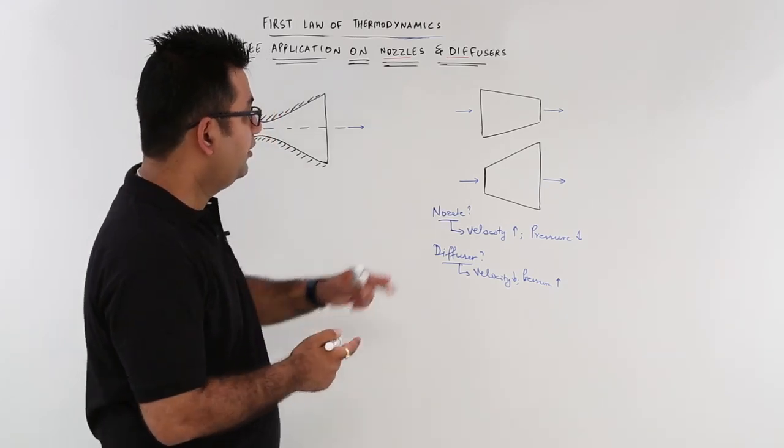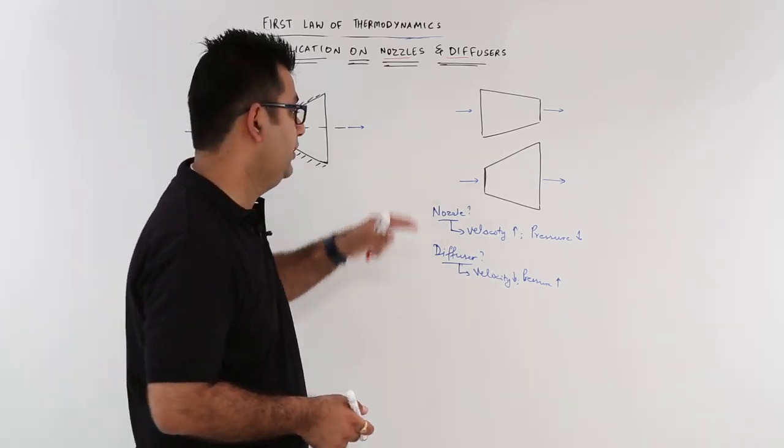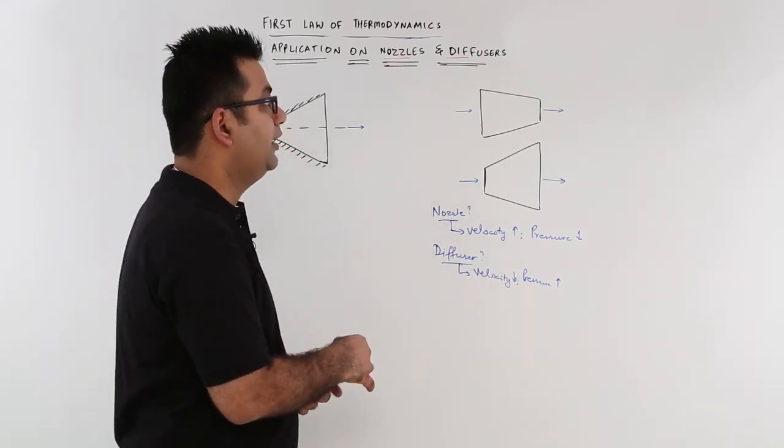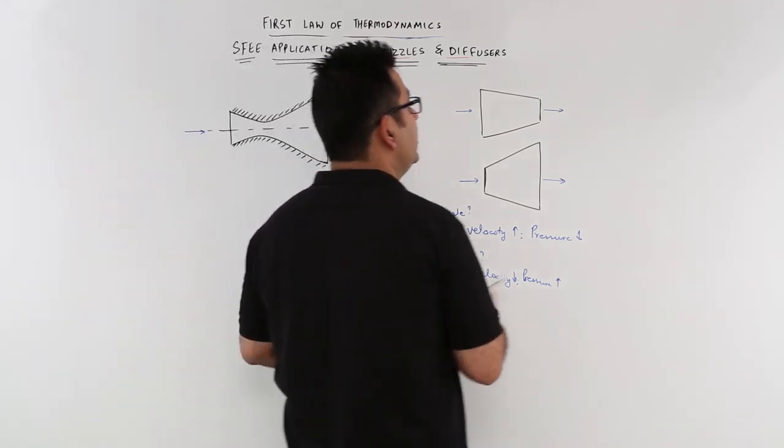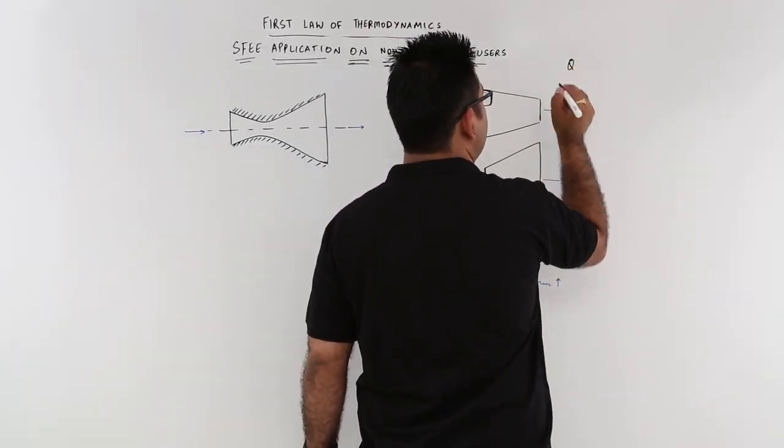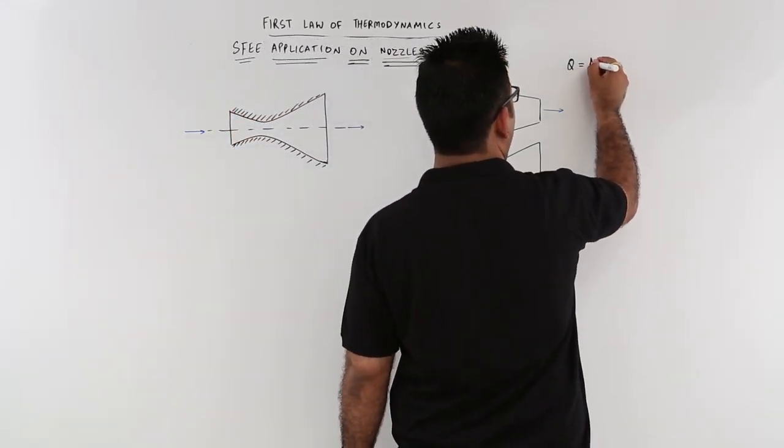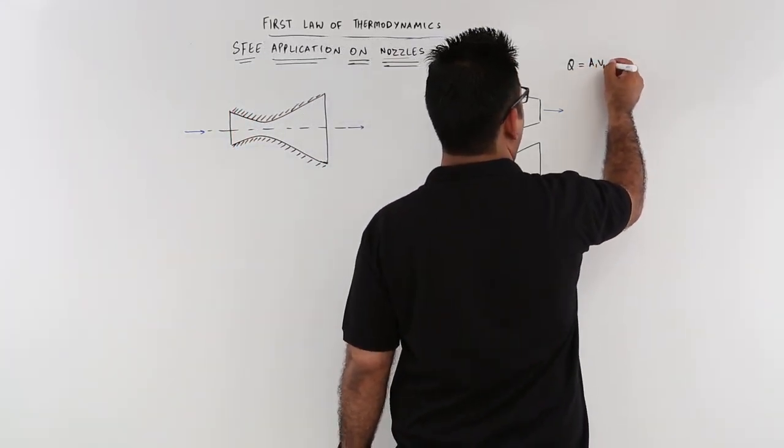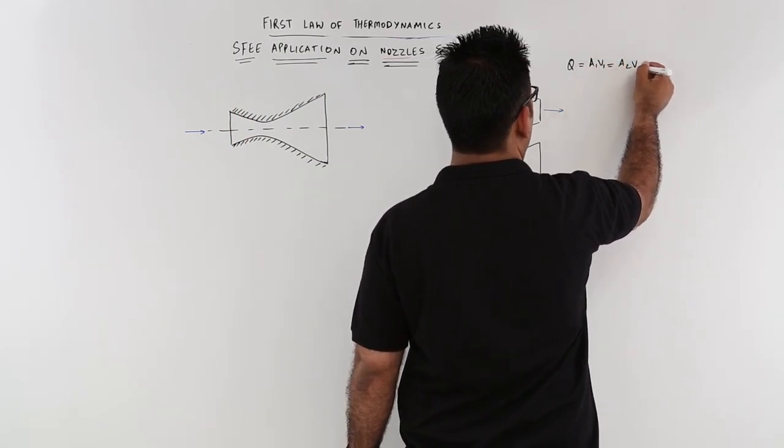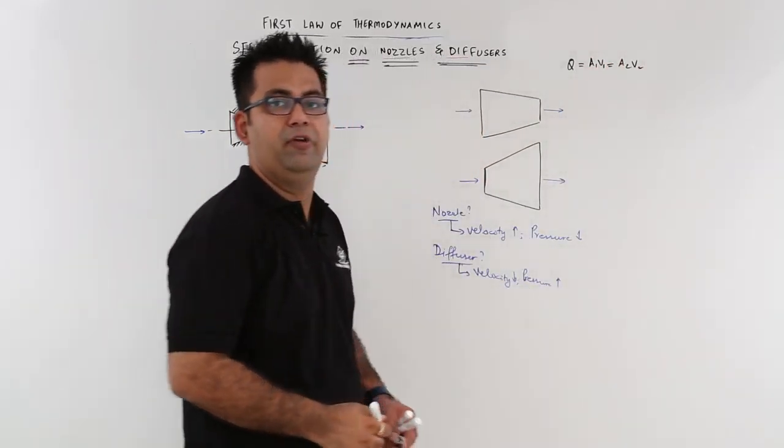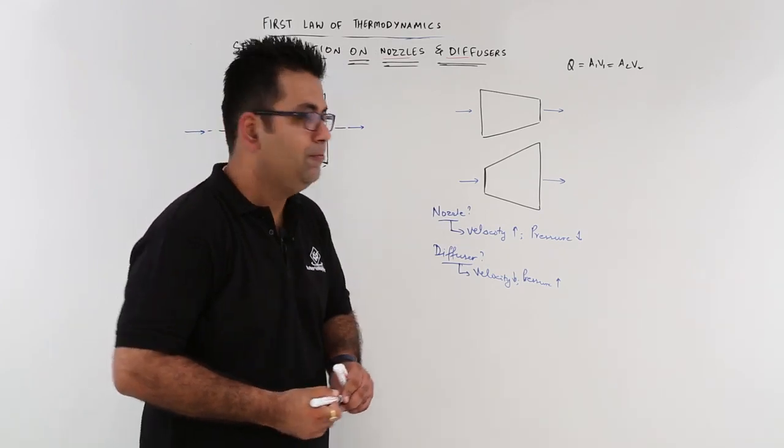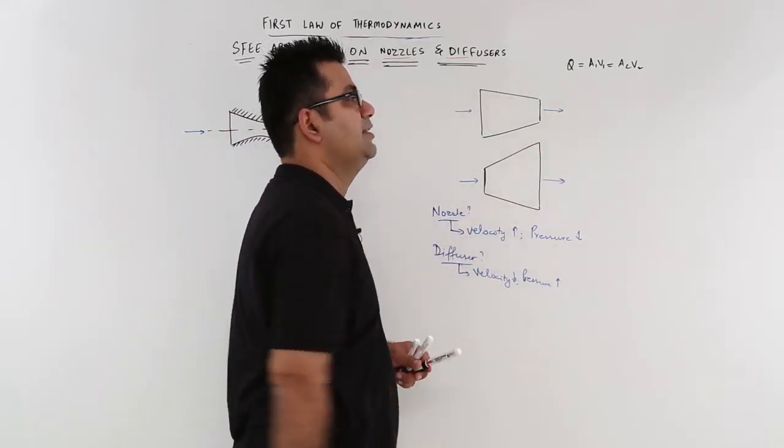Now which one of them is a nozzle and which one of them is a diffuser? Let us look at the continuity equation. The continuity equation says that q, which is also a symbol for discharge, is equal to a1·v1, which is equal to a2·v2. Area into velocity is a constant value at entrance and at exit.